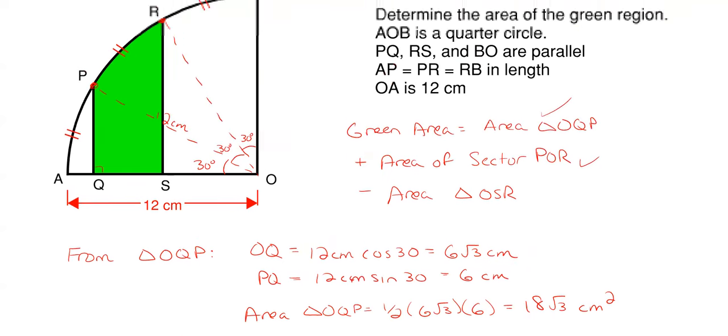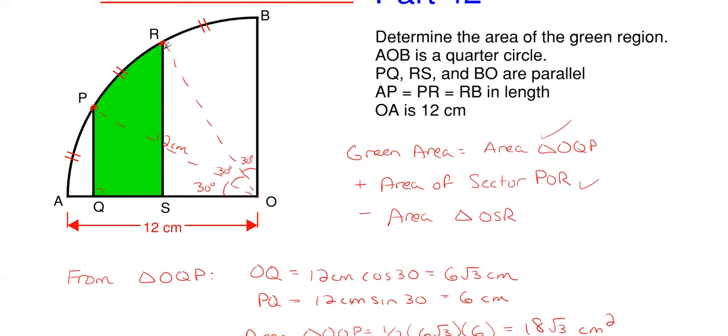And then lastly I just need the area of this triangle shown in white from R, S and O here. And well now I'm going to utilize my overall angle for that right triangle which is right here which is now 60 degrees.